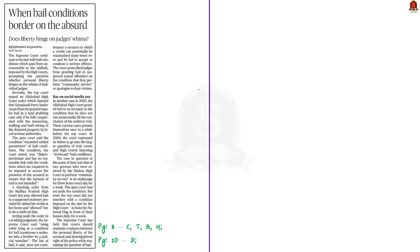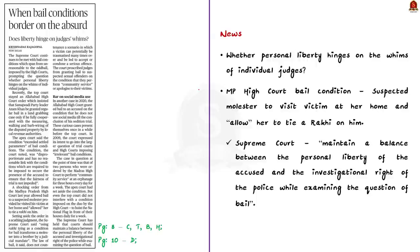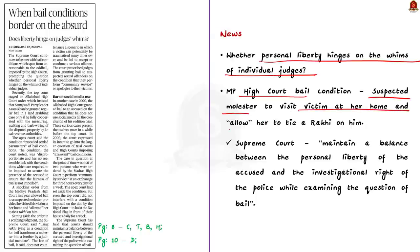The next article talks about unreasonable bail conditions imposed by high courts, raising the question of whether personal liberty hinges on the whims of individual judges. For example, last year in Madhya Pradesh, the High Court allowed bail to a suspected molester on the condition that he visit his victim and allow her to tie a rakhi on him. The Supreme Court struck down this judgment, stating that using rakhi-tying as a bail condition transforms a molester into a brother by judicial mandate.